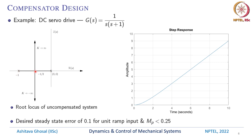This is the root locus of the uncompensated system. If we want some other dominant poles not on this root locus, we need to do something else — that is called the compensated system. In this example, let us assume we want a desired steady state error of 0.1 for a unit ramp input and a peak overshoot of less than 0.25. The response to a step input will have a small exponential portion and then a linear straight-line behavior. The gap from the 45-degree line determines the steady state error for the unit ramp input.